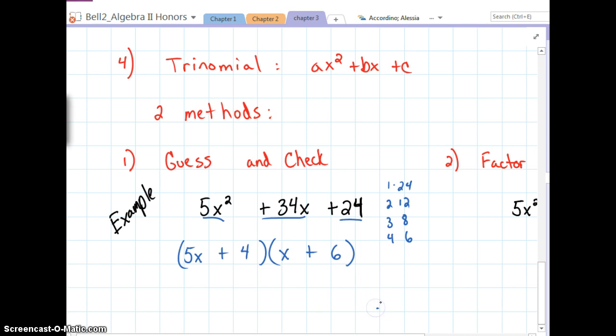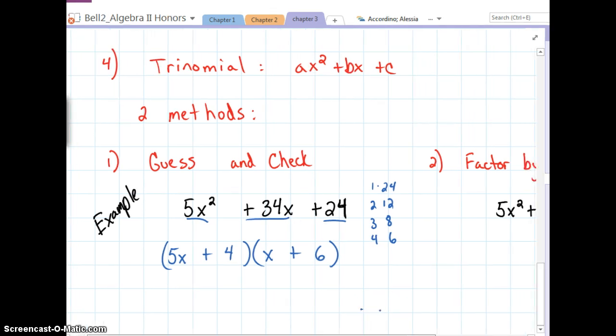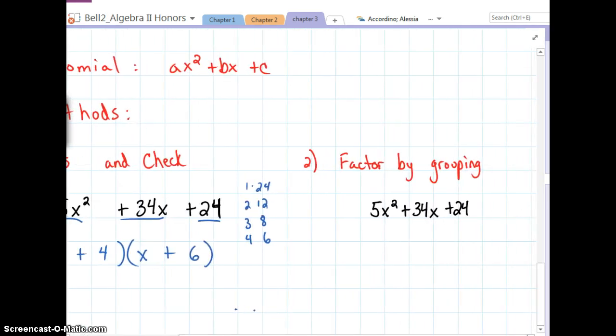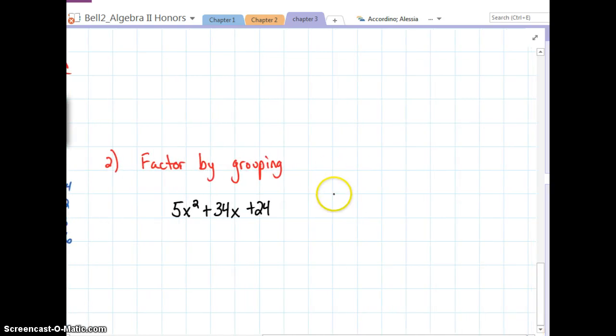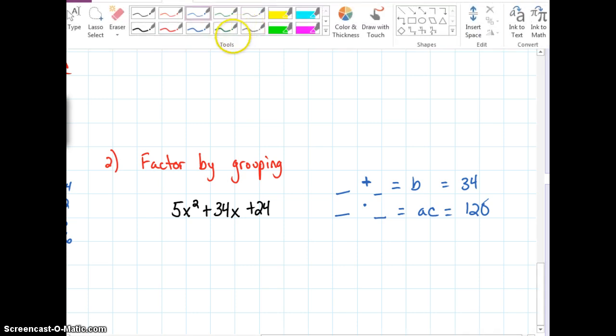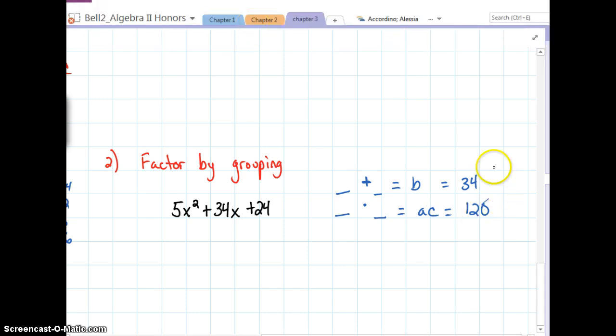But, there are other ways of doing it if you don't like guessing and checking. So, what we can look at here is doing it by factoring by grouping. In a similar way to as we did before, you're going to come up with numbers that add to b. But, those same two numbers have to multiply to a times c. Well, in this case, b is positive 34. And, in this case, ac is 5 times 24, which is 120. So, we need numbers that add to 34 but multiply to 120.